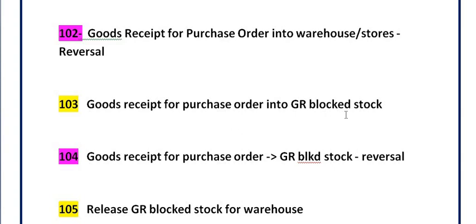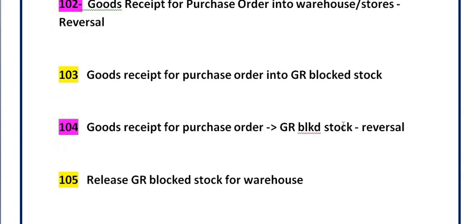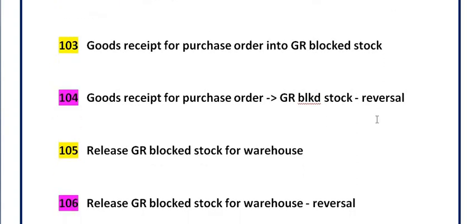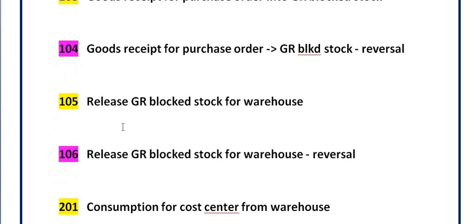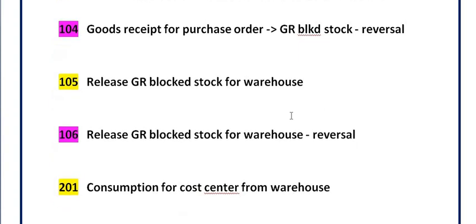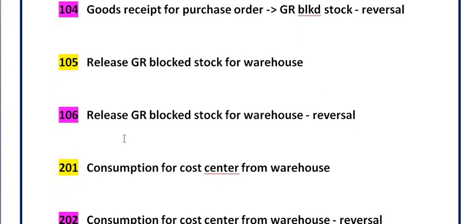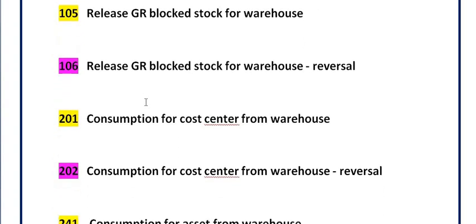Movement type 103 is goods receipt for a purchase order into GR blocked stock — that is, goods receipt for a purchase order which you have flagged as blocked stock. Movement type 104 is the reversal of GR blocked stock. Movement type 105 releases the goods receipt blocked stock to the warehouse, and 106 is the reversal of movement type 105.